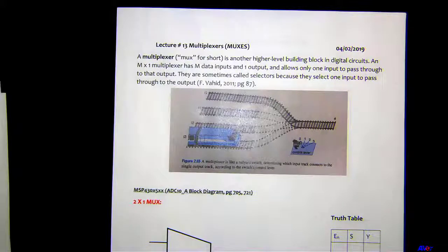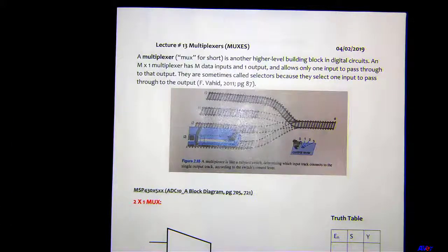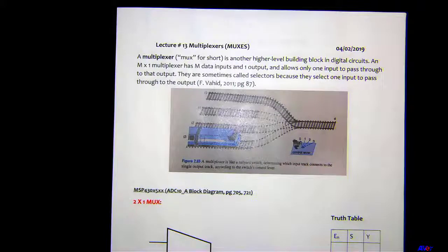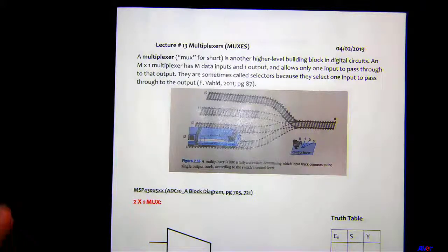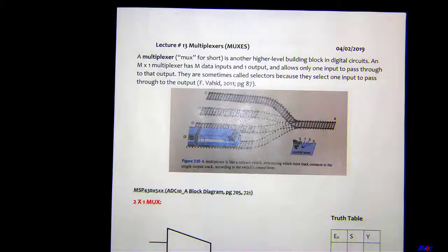I also have this analogy to explain what a multiplexer looks like. A multiplexer is another high-level building block in digital circuits. An m-times-one multiplexer has m data inputs and one output and allows only one input to pass through to that output. They are sometimes called selectors or binary selectors. If you really look at it, it's like a rail yard switch — you've got four tracks: I0, I1, I2, and I3.